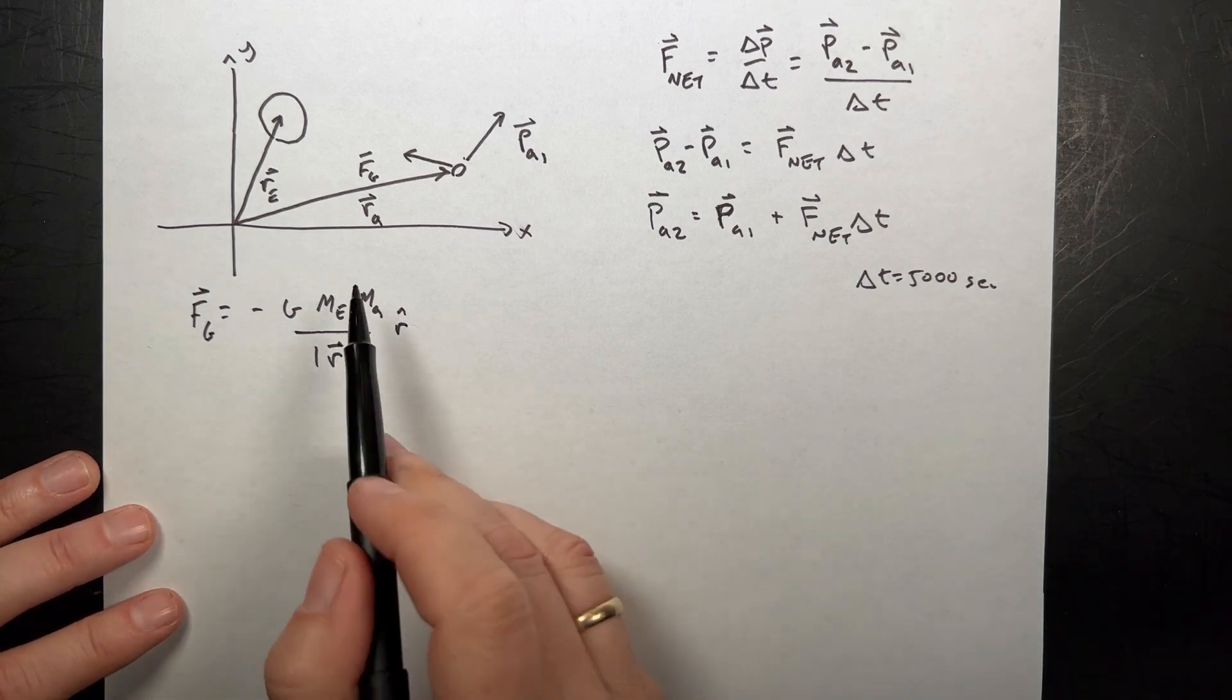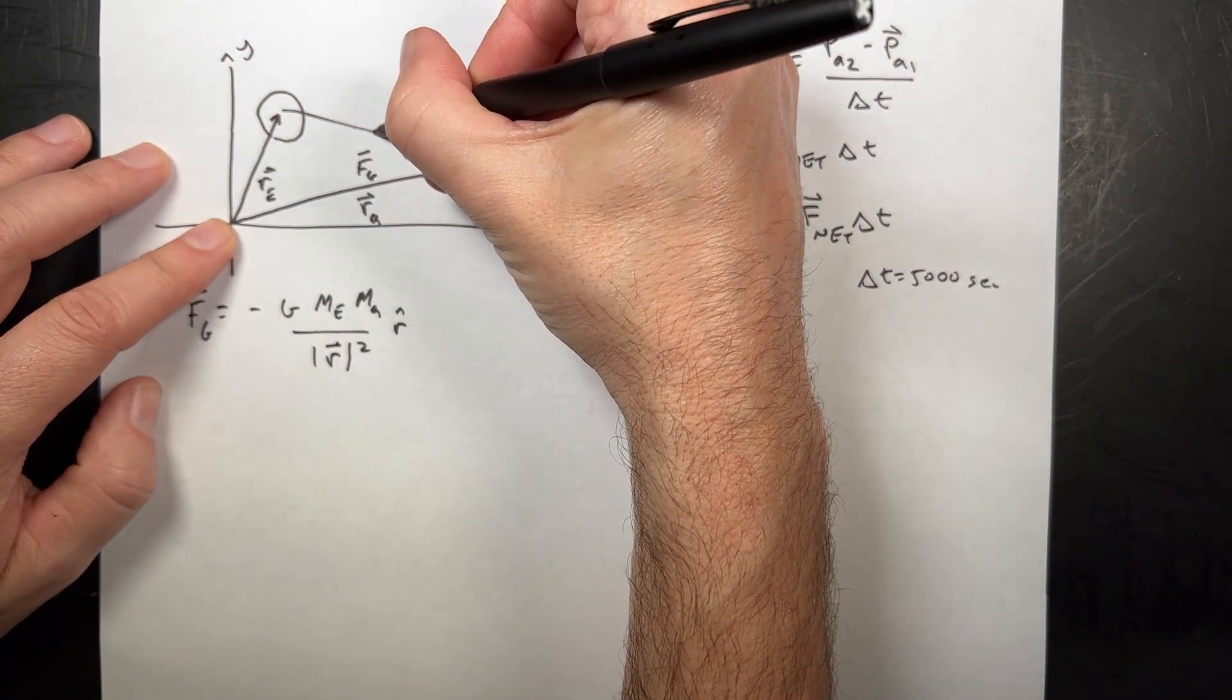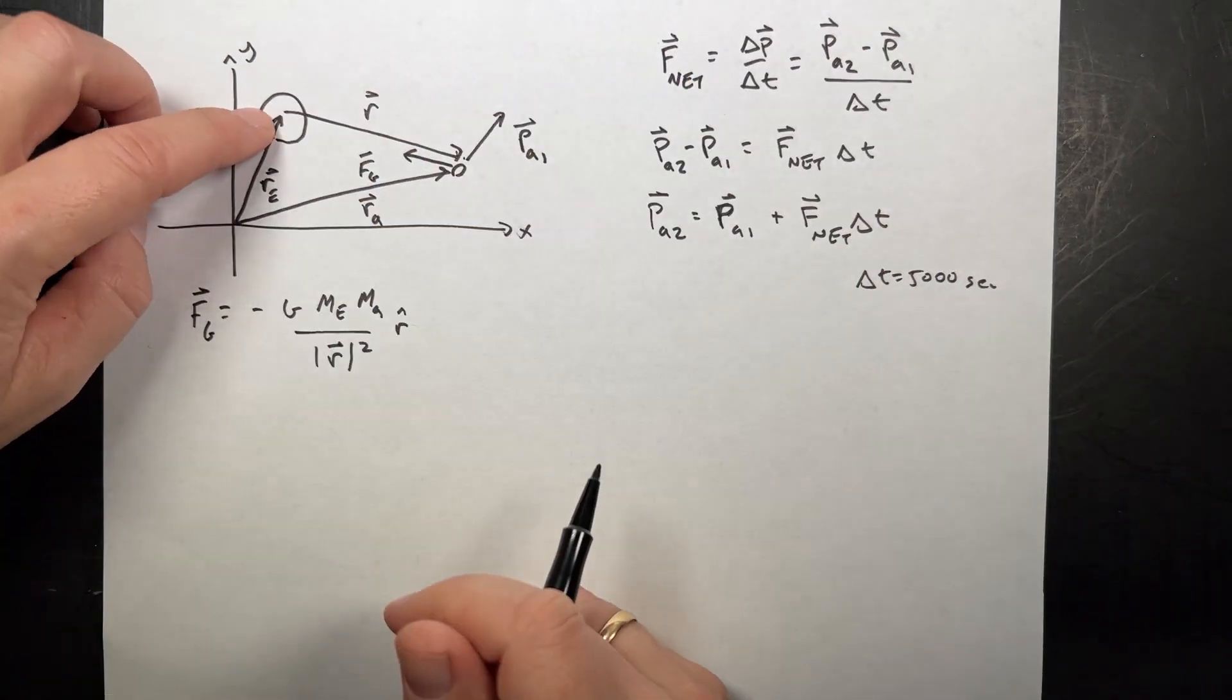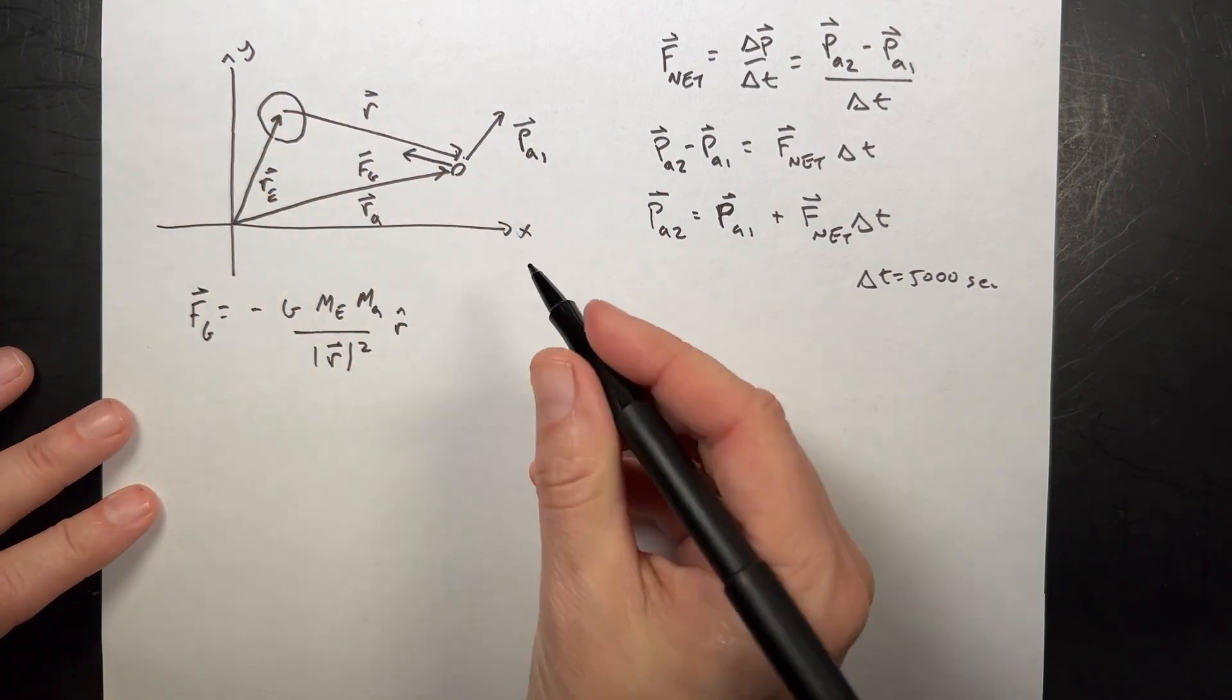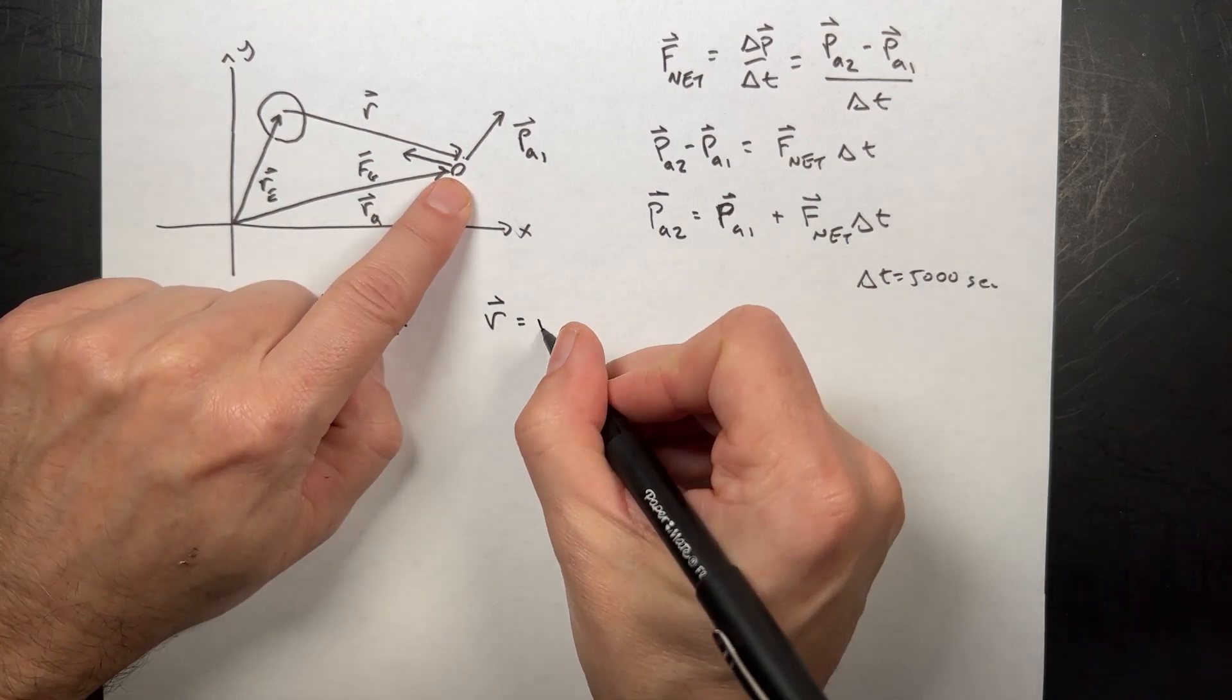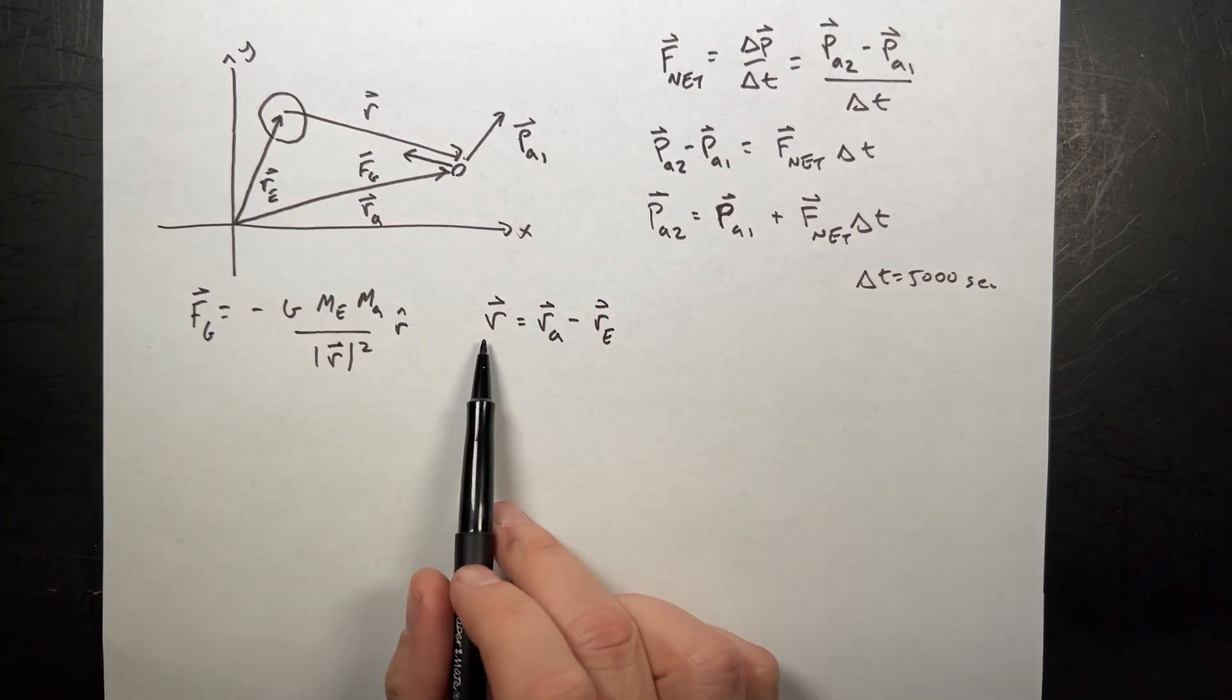But what's r? It's not the position due to some random arbitrary point. We need this vector r. r is the vector from the Earth to the asteroid. And so you see here that I have a triangle. And graphically, we can see that the vector r is going to be the final position, which is the position of the asteroid, minus the initial position, which is the position of the Earth. So I can find the vector r.